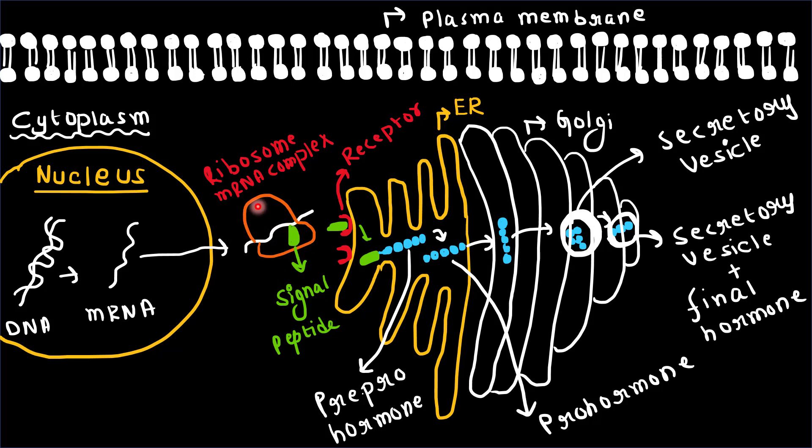Translation of mRNA begins with a signal peptide at the N-terminus. Translation ceases and the signal peptide attaches to the receptors on the endoplasmic reticulum. Translation then continues on the endoplasmic reticulum until the entire protein is produced.